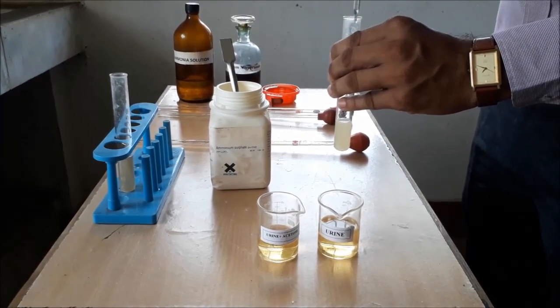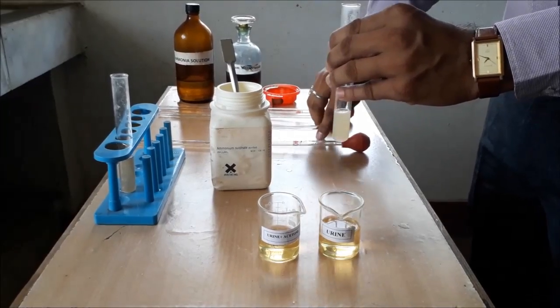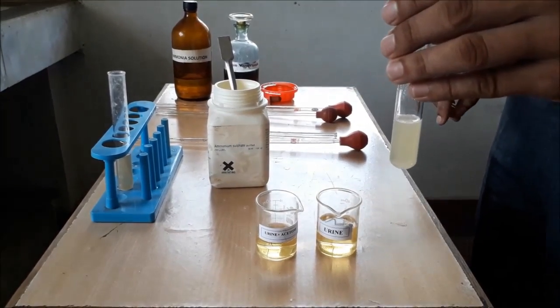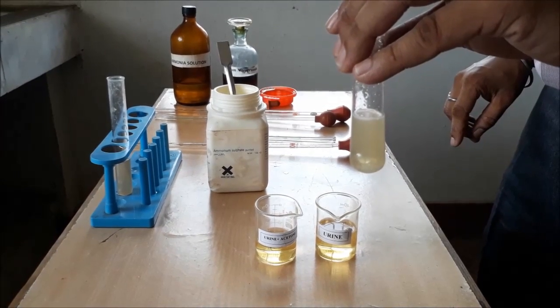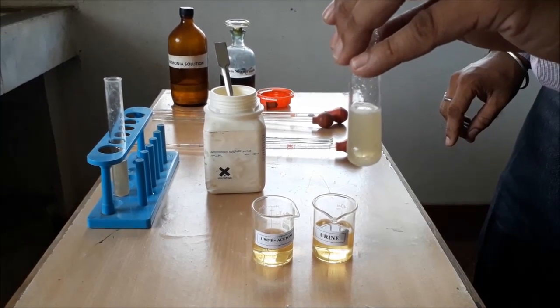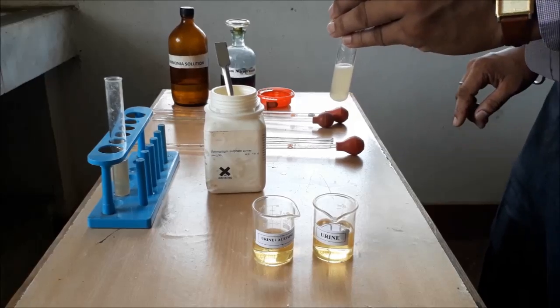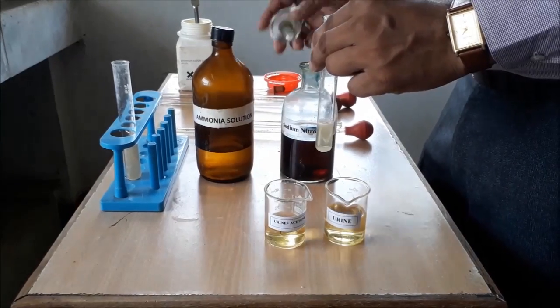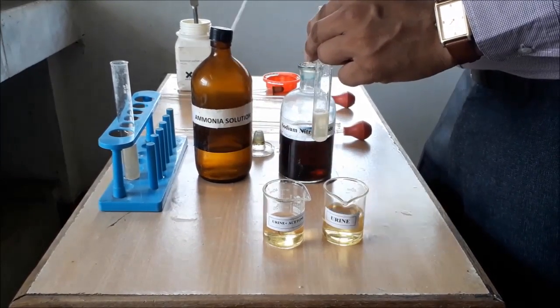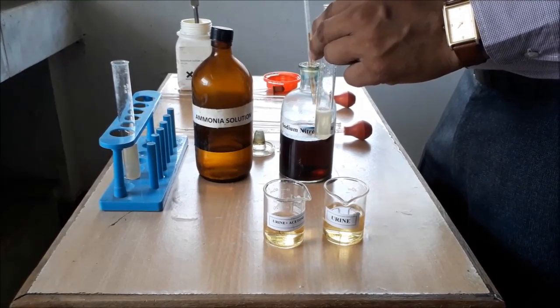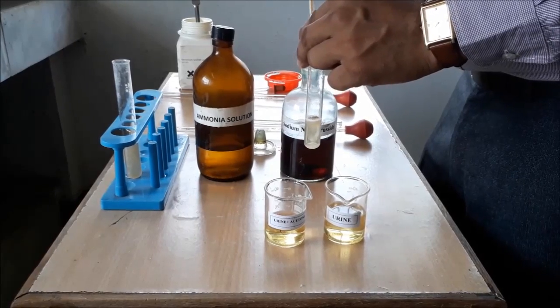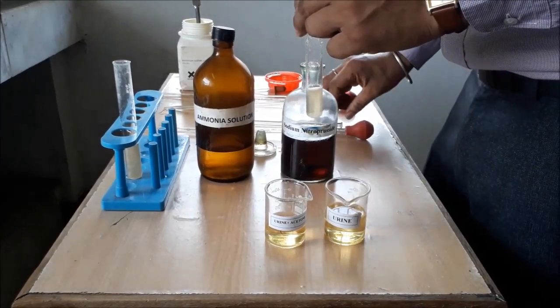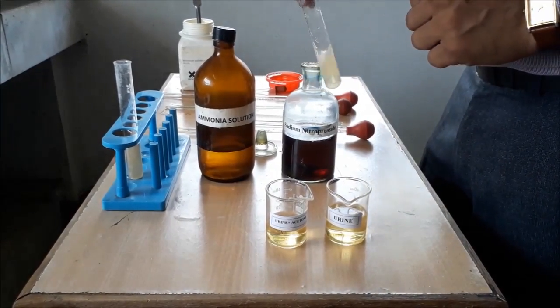We have mixed it thoroughly. And we are about to see that there is a presence of undissolved crystals of ammonium sulphate. Now, we are adding two drops of sodium nitroprusside on the sample.